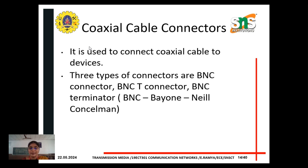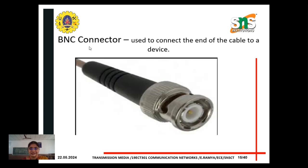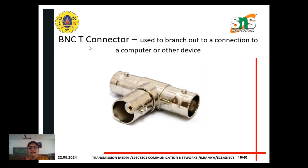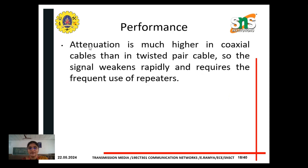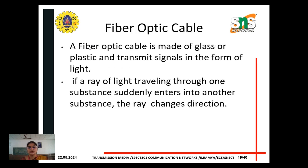Coaxial cable connectors are used to connect coaxial cable to devices. The BNC connector is used to connect the end of the cable to the device. The BNC T-connector is used to branch out a connection from a computer to other devices. The BNC terminator is used at the end of the cable to prevent the reflection of the signal. Attenuation is much higher in coaxial cable than in twisted pair cable.